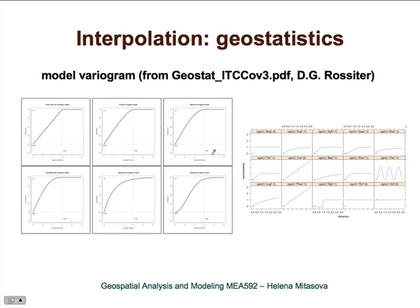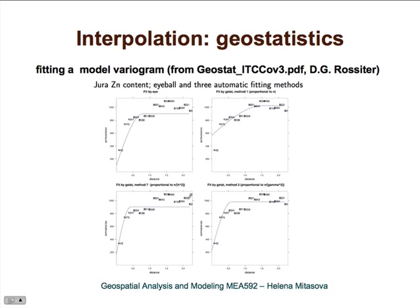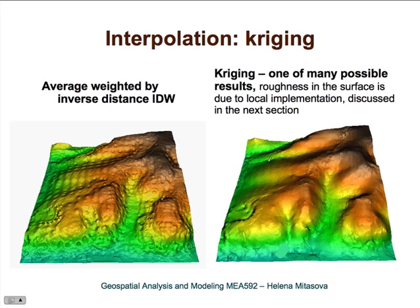There are many examples of different model variograms that you can fit, and the selection of these variograms will also define how the resulting surface looks. Here you can see different model variograms fit to certain given data. It can be a pretty challenging task, and you can fit different model variograms to the same data. We will not go deeper into geostatistics, as there is a 700-level course that devotes a full semester to geostatistics, kriging, and universal kriging. This is just one example result of many possible results using geostatistics.